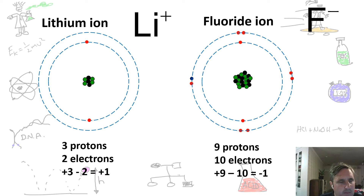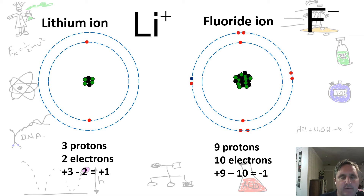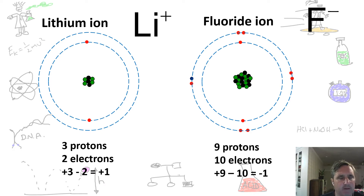Now the atoms have become ions. The lithium becomes lithium one plus, Li+. The fluoride ion now has one more electron than it does protons — ten electrons and nine protons — so it becomes a fluoride ion, F minus. We don't put the one in; whenever in chemistry there is just a single charge, we leave that out. So a minus means one negative charge and a plus means one positive charge.